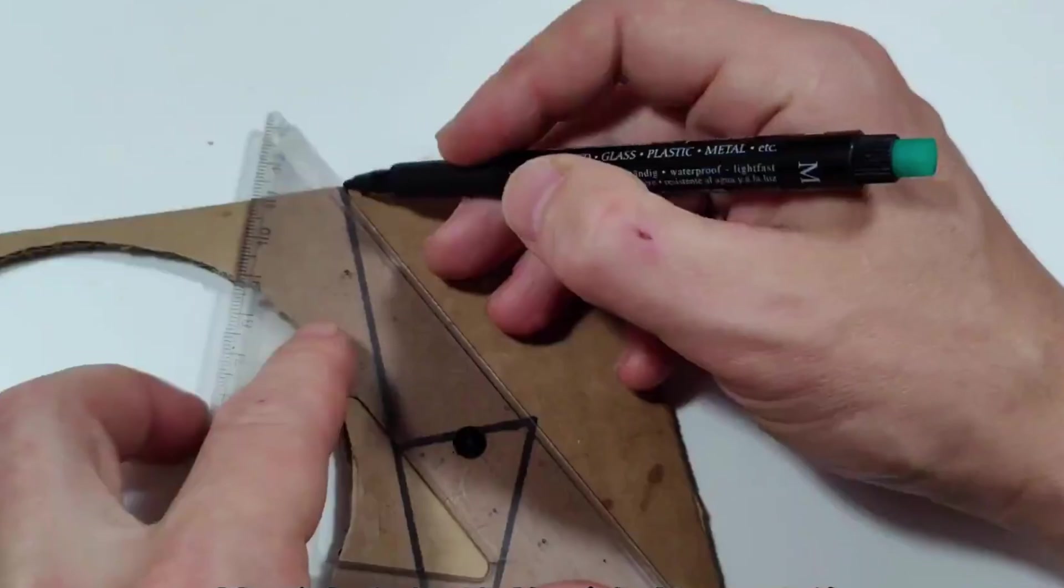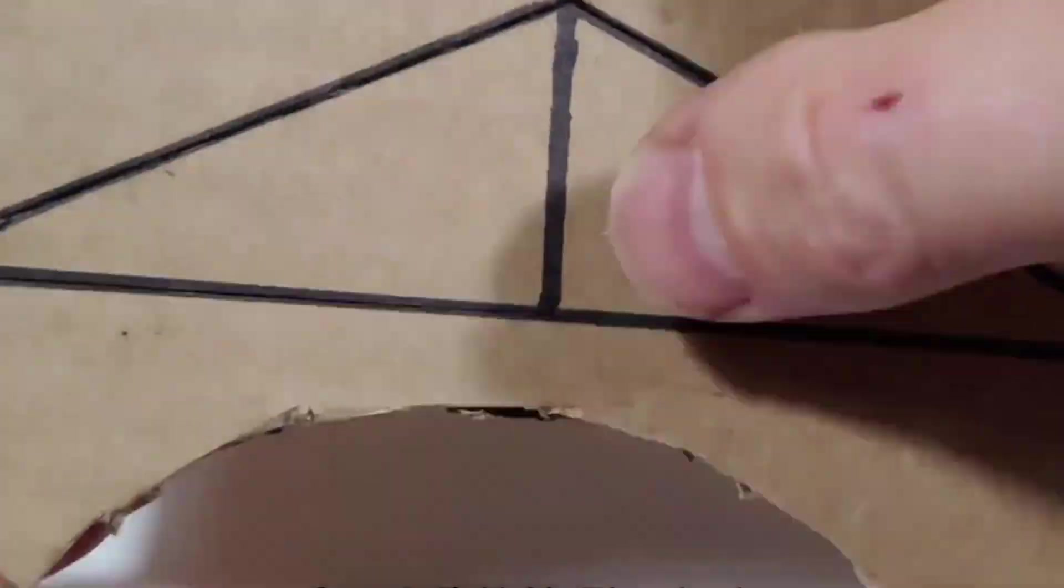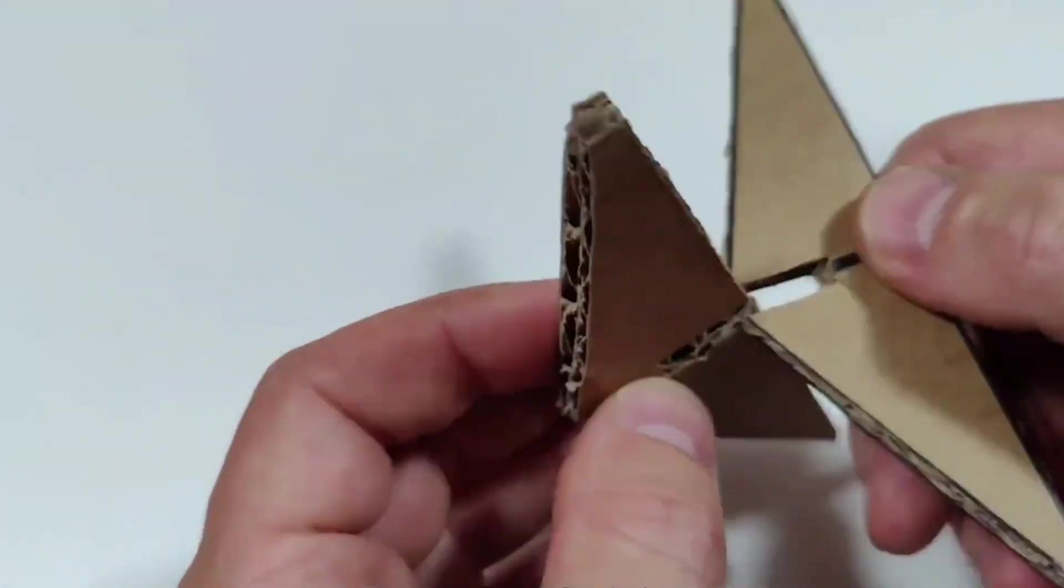Now, cut out two cardboard triangles, 13 centimeters long and 3 centimeters tall. Glue them together to form a support frame for the solar panels.